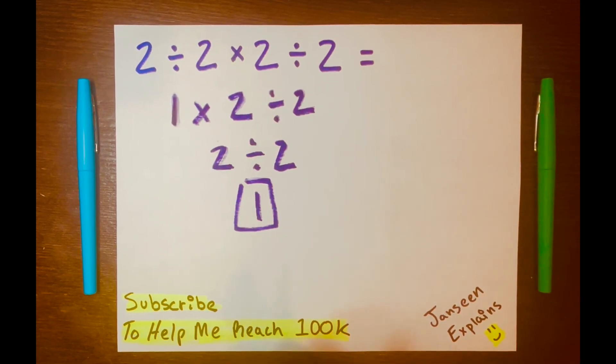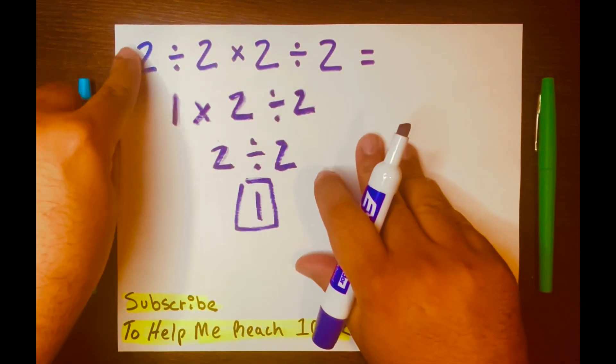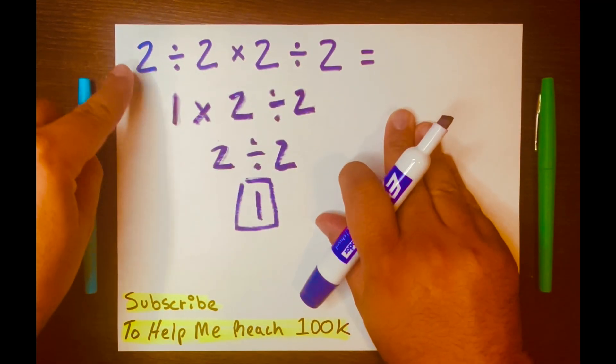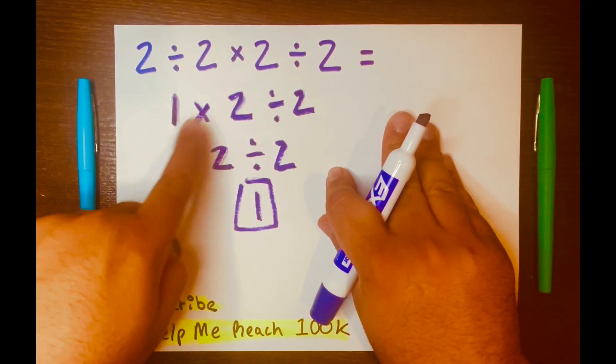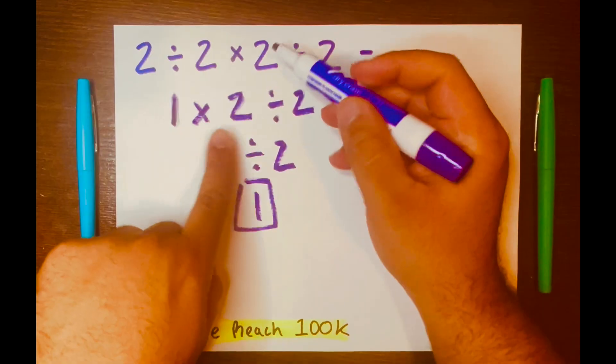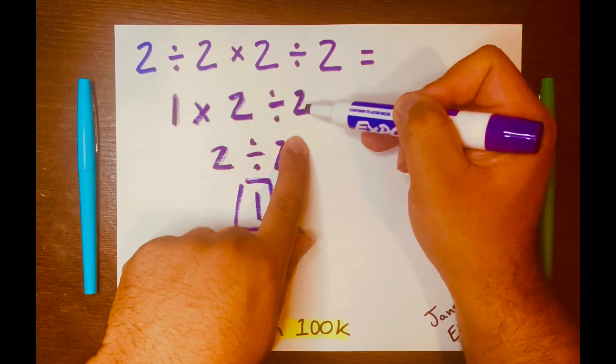What do you think? Put that in the comment section down below. I think this is right. Let's look over this whole math problem again. We have 2 divided by 2, which is 1, times, bring down the times, and then the 2, the division goes down, and then the 2.